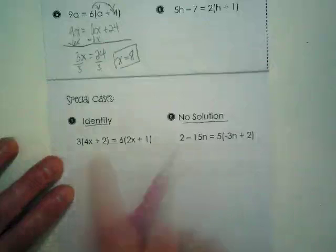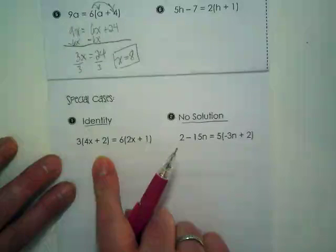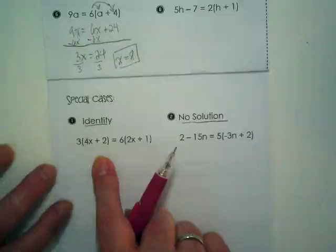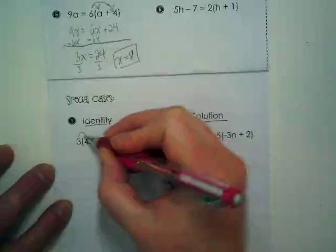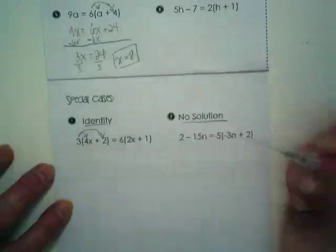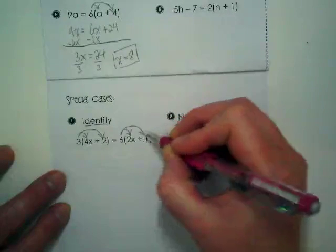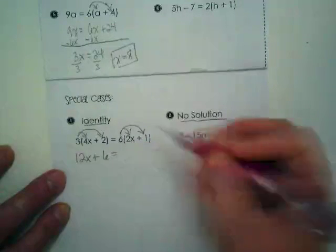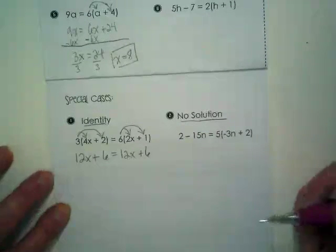Okay, let's go through and solve. In this case, and you can't always tell from the beginning, I'll be honest with you, it's not until you get to your solution that you're often going to see if this is a regular equation where a variable equals a number or if it's identity or no solution. So let's just go through. First, we're going to distribute this 3. And on the other side of the equation, we're going to distribute the 6. We're going to get 12x plus 6 is equal to 12x plus 6. What do you notice about that?